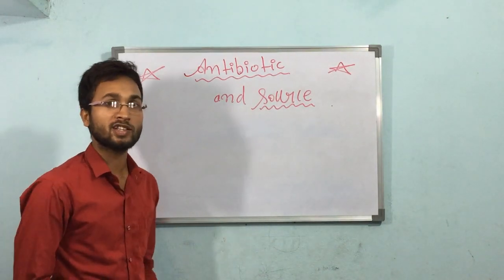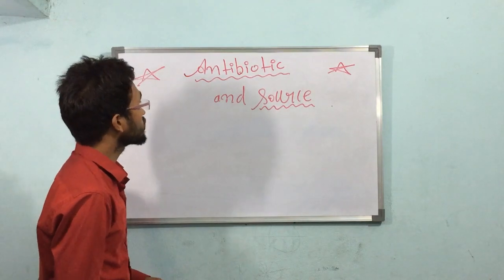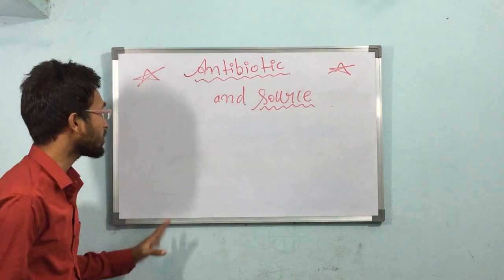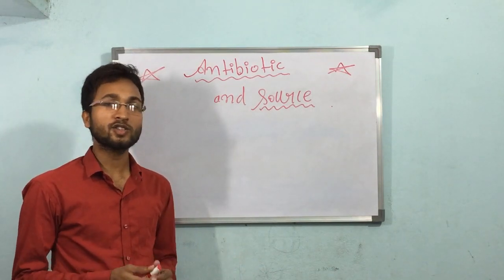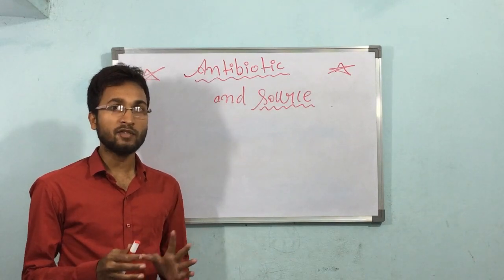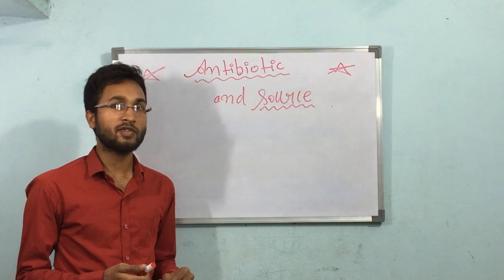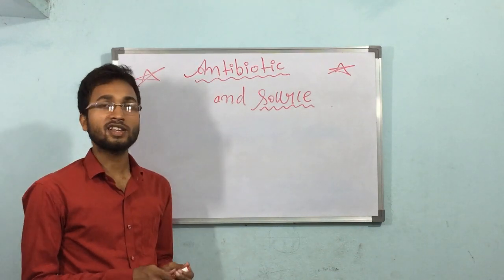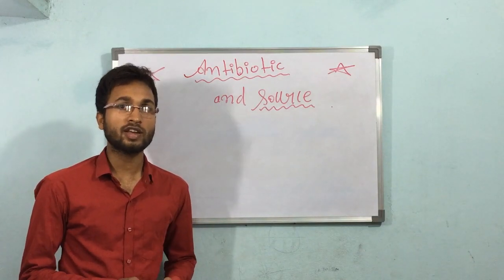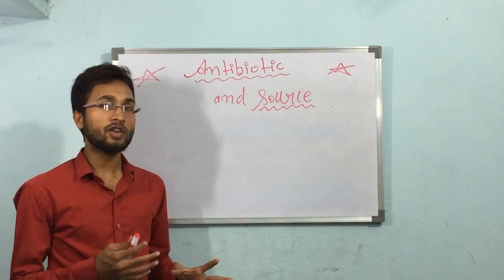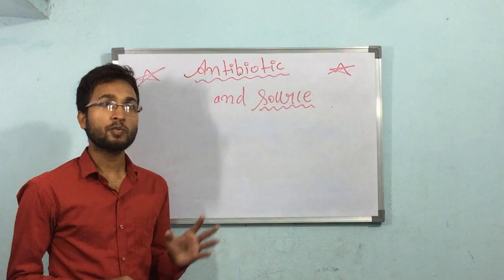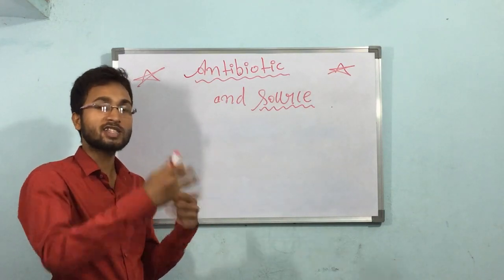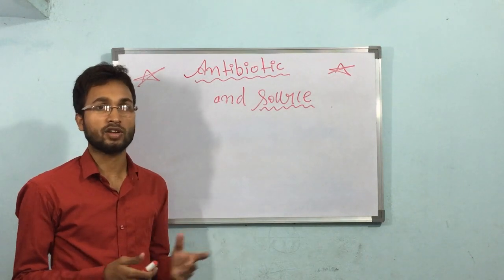Hi guys, this is Ravi. Today I will discuss antibiotics and their sources. The simple definition of antibiotic, if you want to see it in one sentence: use the life to kill the life. For example, penicillin is obtained from the microorganism Penicillium notatum — we get it from an organism and then use it to kill other microorganisms. That is called an antibiotic.